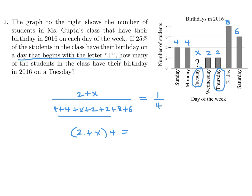Which I believe is 26 plus x. Then 8 plus 4x equals 26 plus x, so 3x equals 18, and therefore x equals 6.